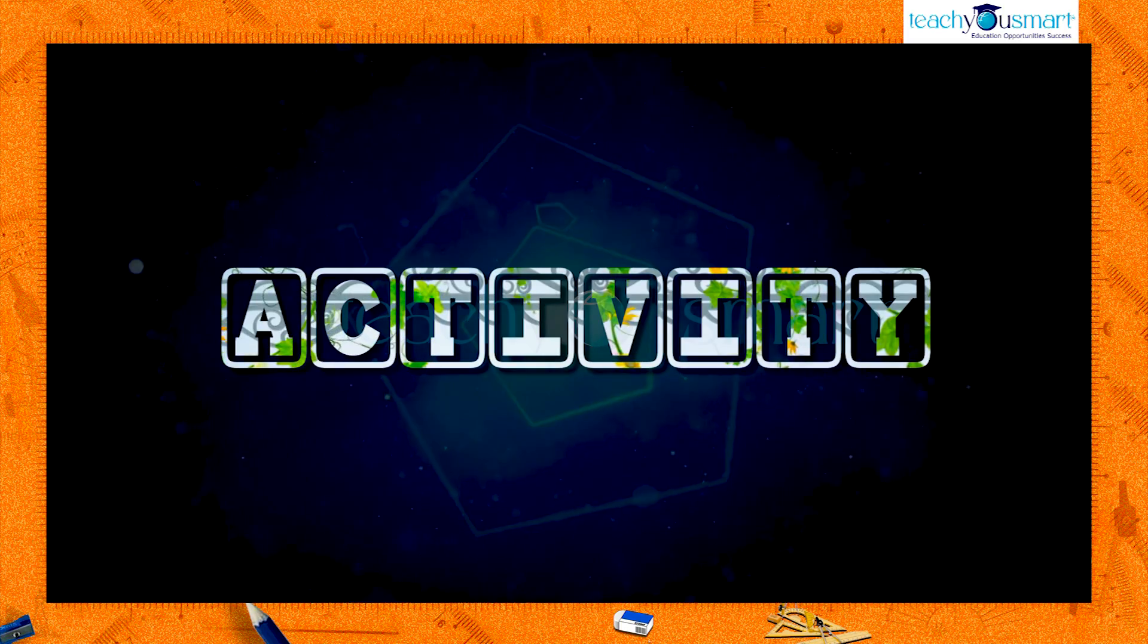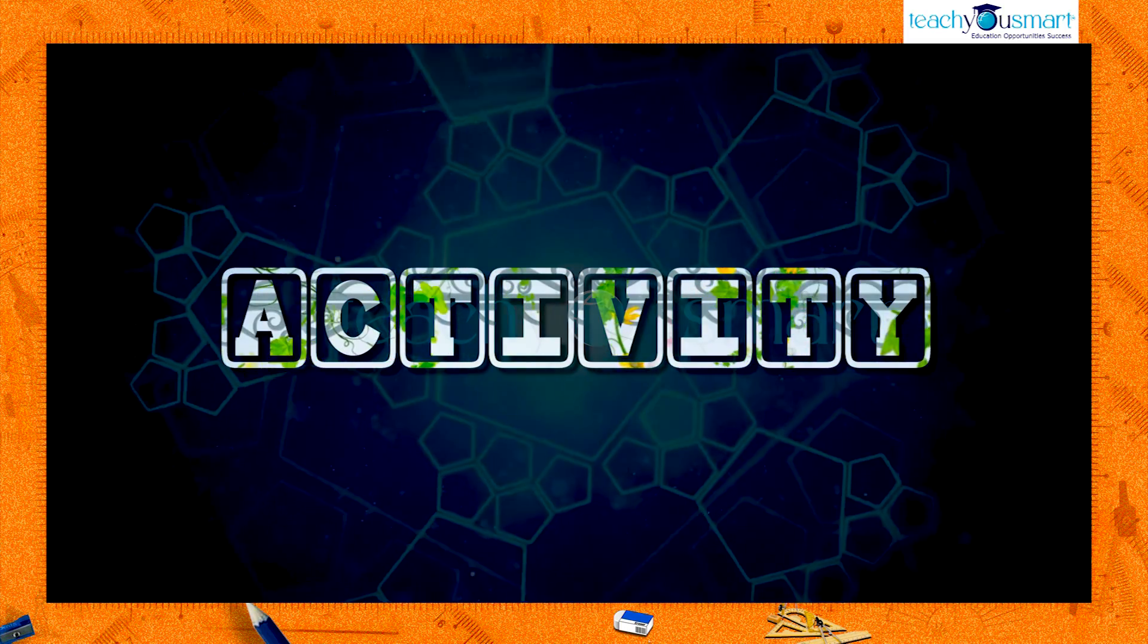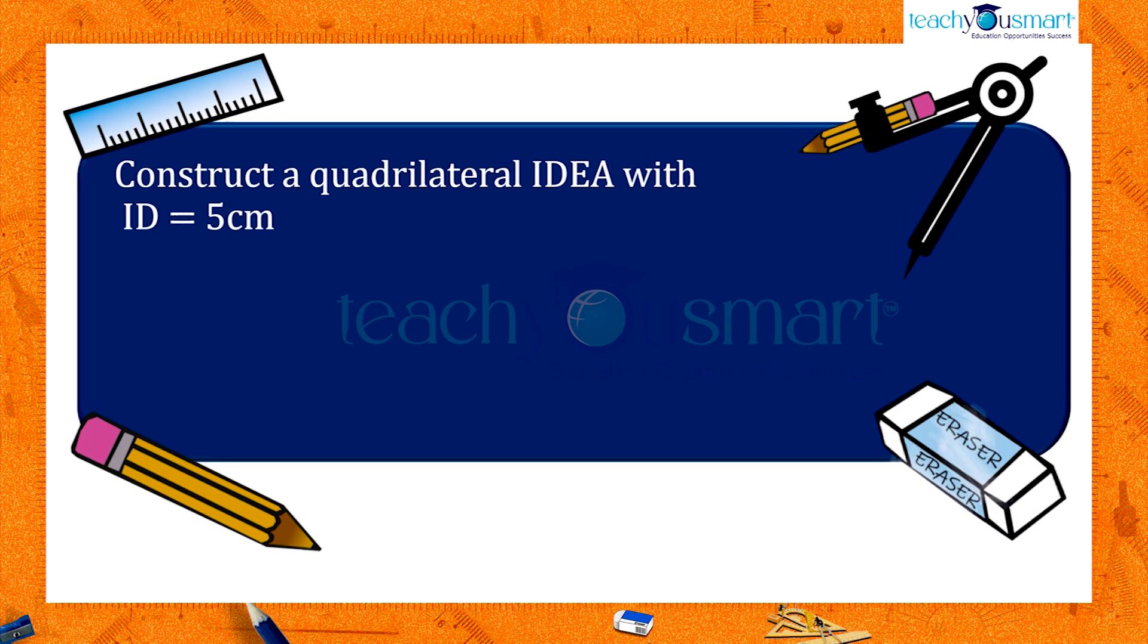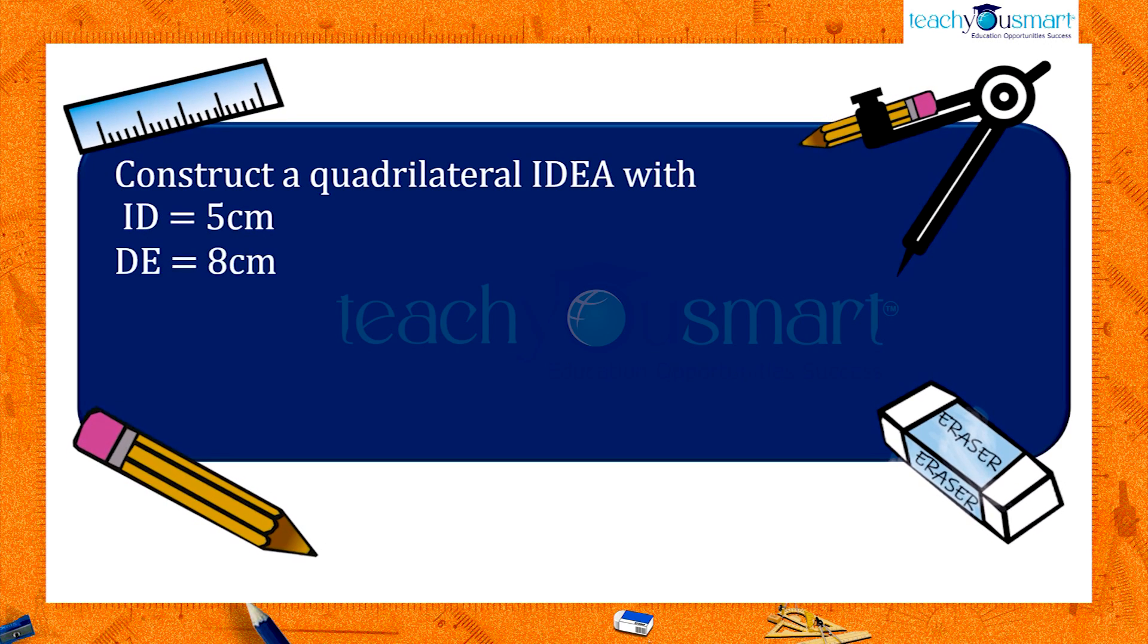Let's try to do this activity: construct the quadrilateral IDEA with the following measurements: ID equals 5 centimeters, DE equals 8 centimeters, EI equals 8.5 centimeters, and IA equals 7 centimeters.